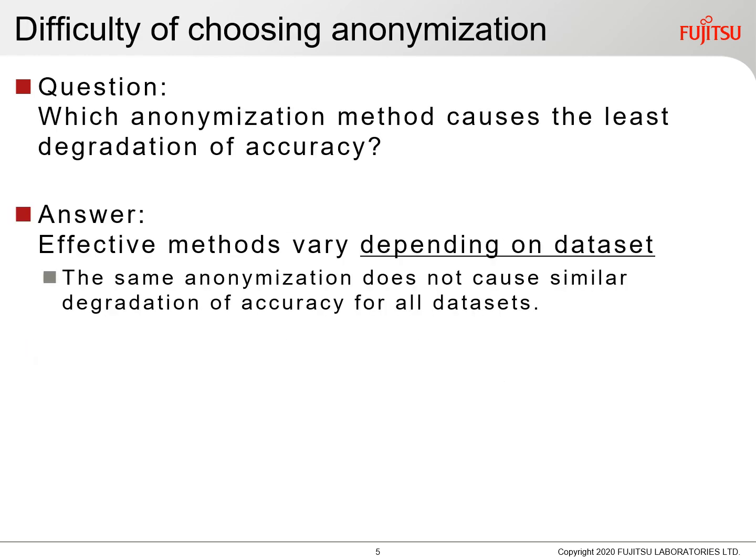There are various anonymization methods depending on how attributes to be kept are prioritized. Which anonymization methods should be used to reduce degradation of accuracy? It's unknown because it depends on the dataset. Even if comparing anonymization methods gives some results, applying them to another dataset will show a different degradation trend. The same anonymization does not cause similar degradation of accuracy for all datasets, and even if an anonymized dataset shows less degradation of accuracy, it does not guarantee similar degradation will be seen on other datasets.